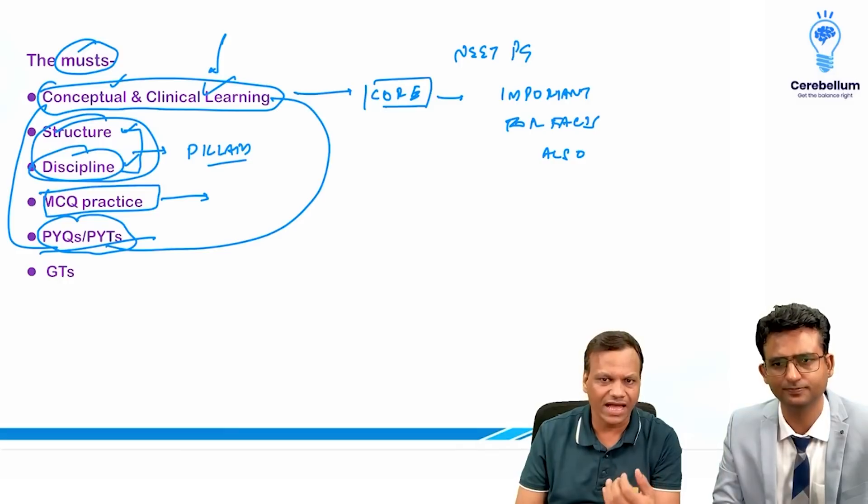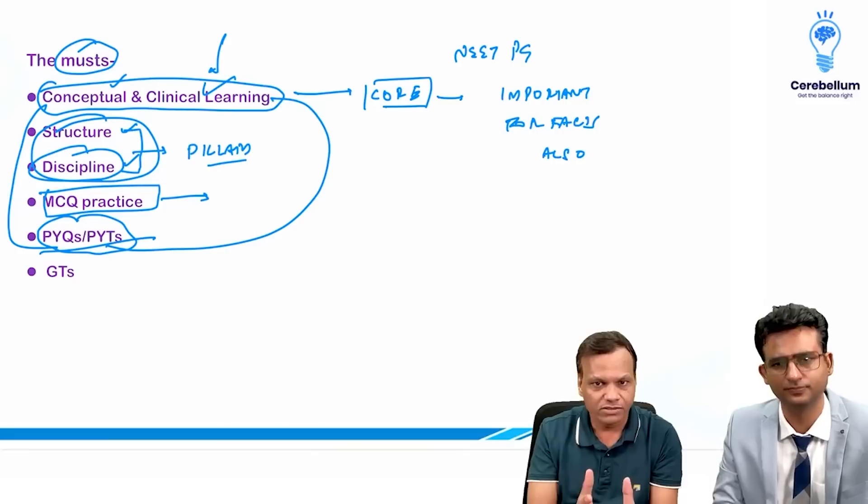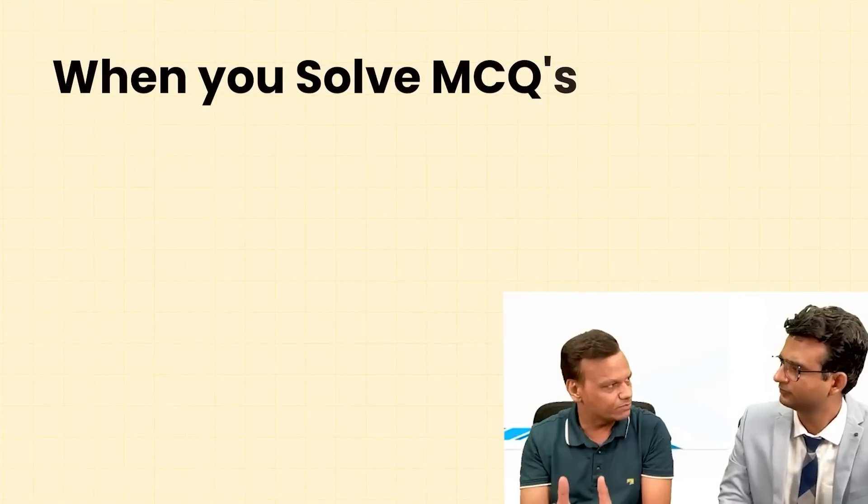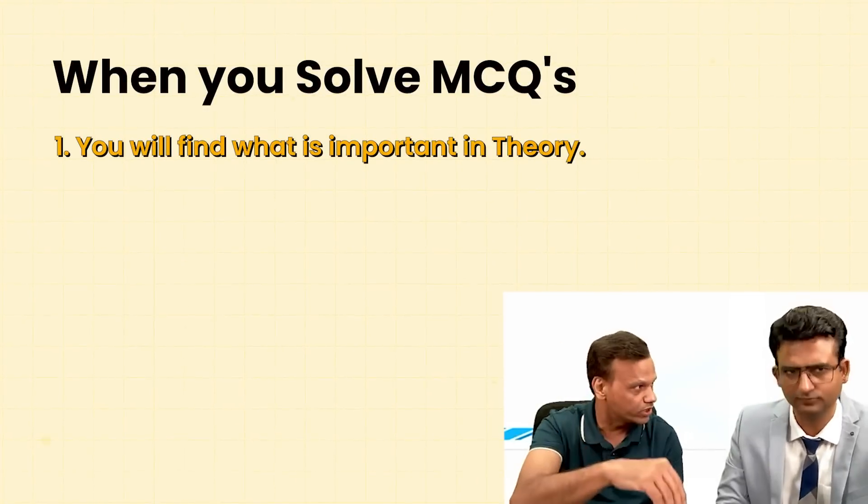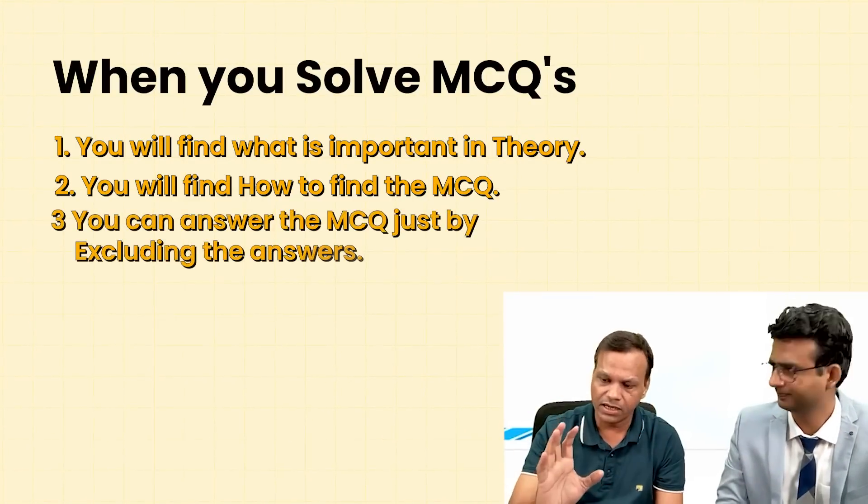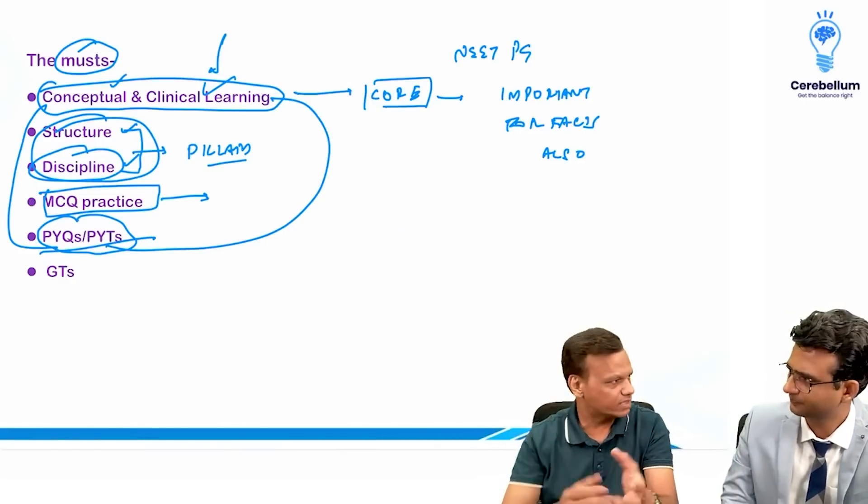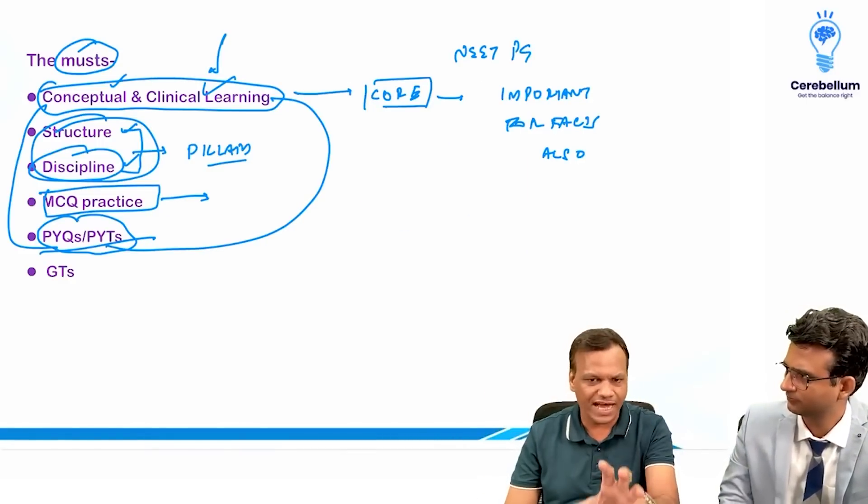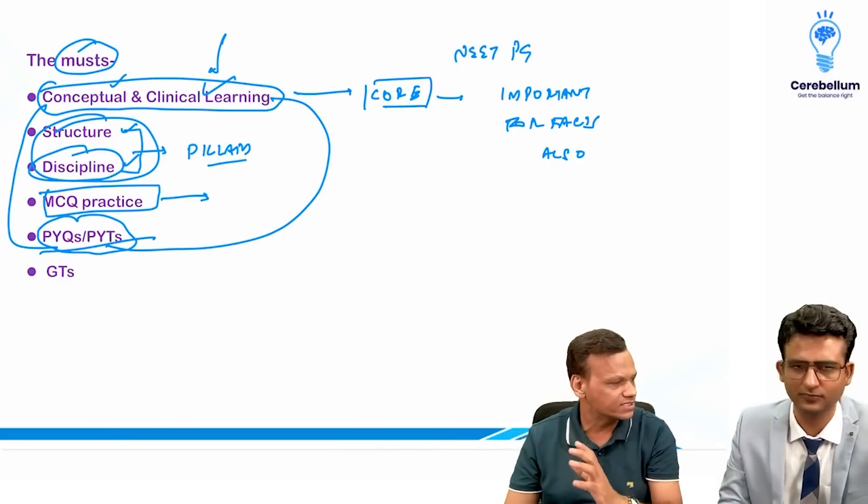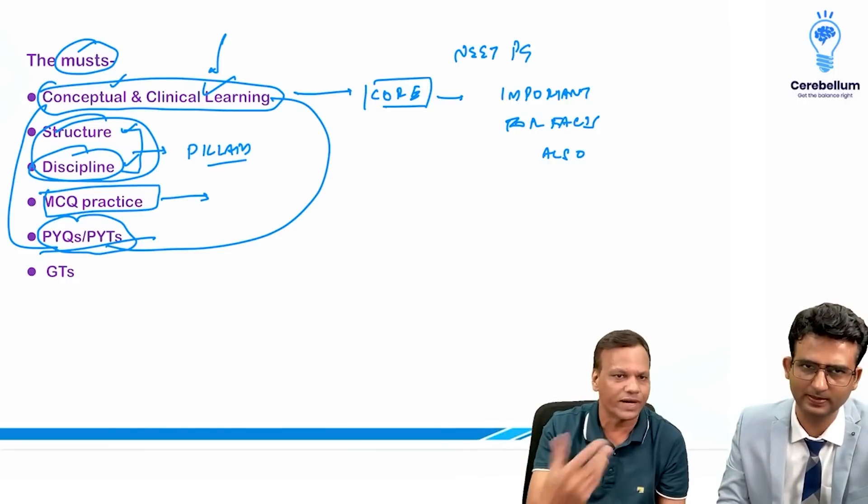And theory and MCQ usually are not in sync. I know a topic very well. Suppose I miss only one line out of that, and in MCQ that line is asked. So when you solve the MCQ, number one, you will find what is important in the theory. And number two, you many times find the things that how to solve the MCQ. Many times you can answer the MCQ just by excluding the options. Like in the pharma also this year some difficult questions were asked. But if you see that out of the four, one option you sure sure know that this is the answer, so you can obviously exclude three options. And sometime you can exclude three options and then you can come to answer. That will come only when you practice MCQs.